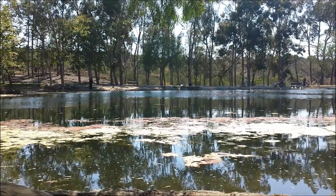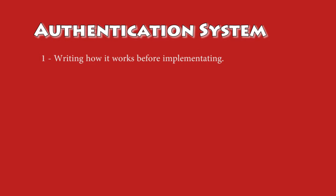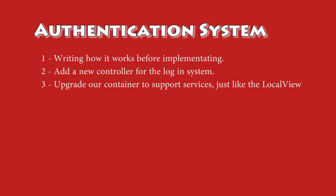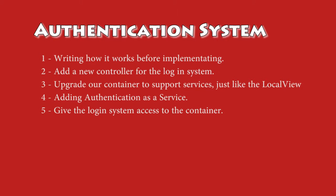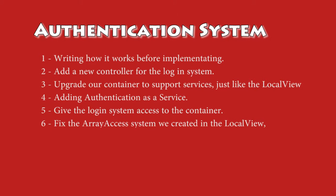Here's how we're going to get started: number one, we're going to write how the code is supposed to work before the implementation. Then we're going to create a new controller for the login system. We're also going to revisit our services, add them to the container, add our login system as a service, and give services access to the container. We'll also fix a bug in our array access system, create a template for our login, and finish with CSS.